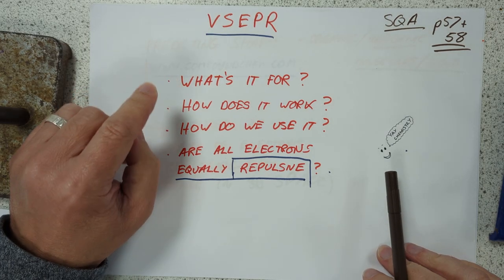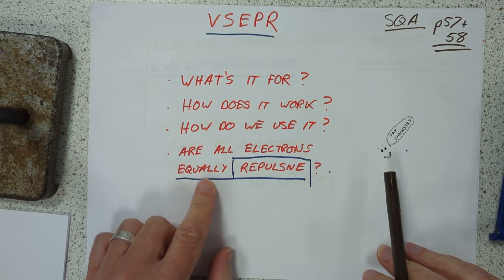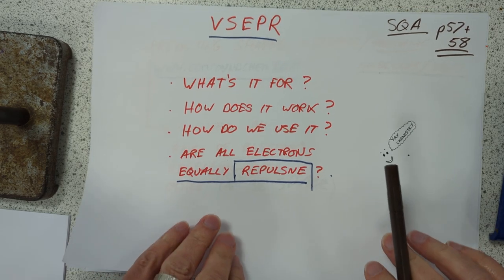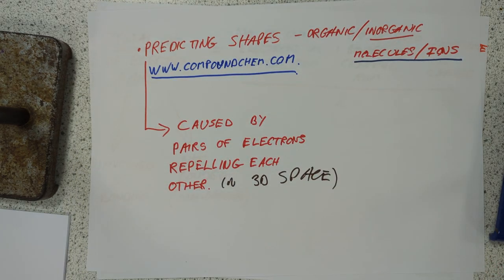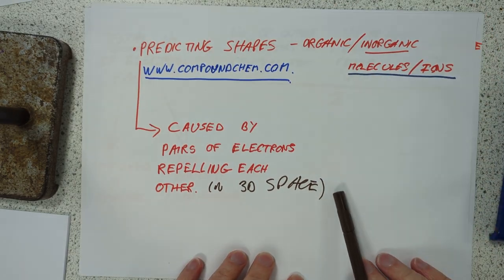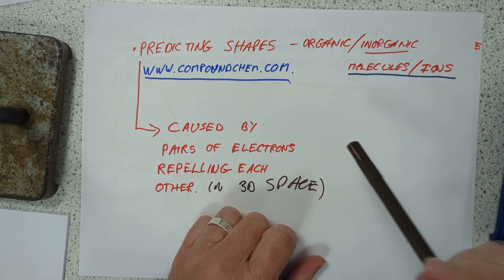What's it for? How does it work? How do we use it? And are all electrons equally repulsive? That's basically what I'd like to run through today. Just a quickie on this one today, folks. Here is what it's for. It's for predicting the shapes of organic molecules or inorganic ions.